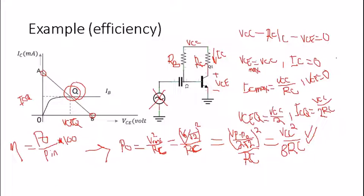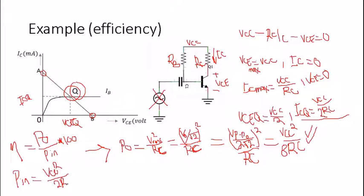Now for P_in, the power from the DC supply is simply VCC × ICQ. Substituting ICQ = VCC / (2·RC), we get P_in = VCC² / (2·RC). Dividing P_out by P_in gives (VCC²/8RC) / (VCC²/2RC) = 2/8 = 1/4, which is 25% maximum efficiency.